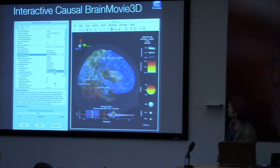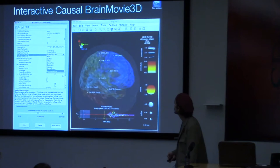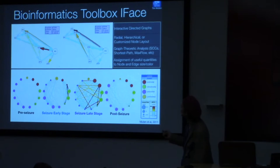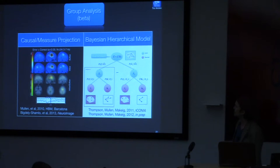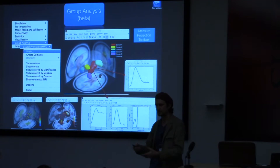There's also an interactive 3D causal brain movie tool showing network dynamics — for instance, a stopping network emerging during a go/no-go inhibitory response. Group analysis routines support different ways to do group statistics, and a measure projection plug-in lets you look at clusters of causal outflow across multiple subjects.